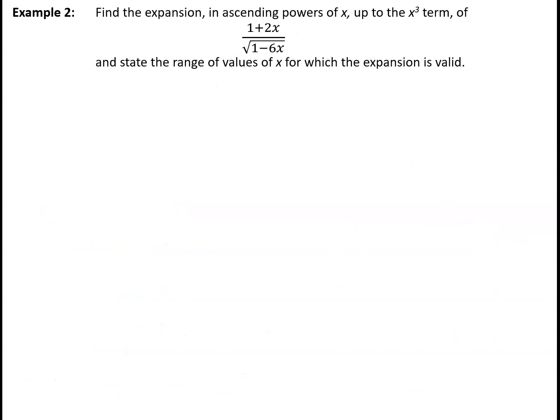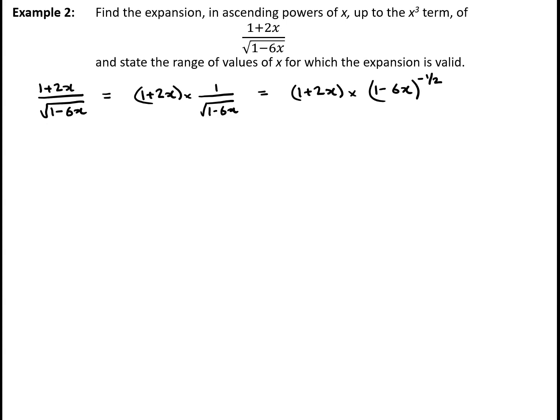Moving on to our second example, we've got to find the expansion in ascending powers of x up to the x cubed term of 1 plus 2x divided by the square root of 1 minus 6x, and state the range of values for which the expansion is valid. We can write 1 plus 2x over the square root of 1 minus 6x as 1 plus 2x times 1 over the square root of 1 minus 6x, which is the same as 1 plus 2x times 1 minus 6x to the power minus a half.